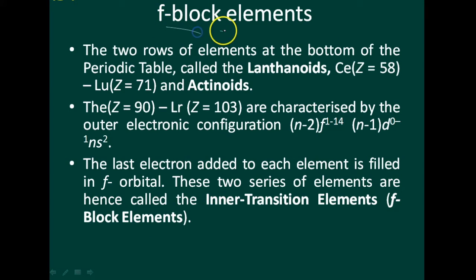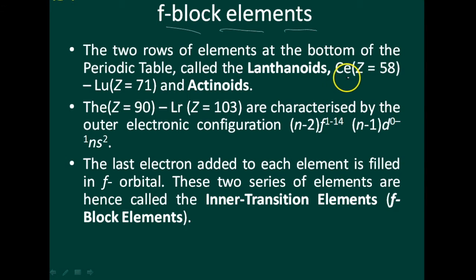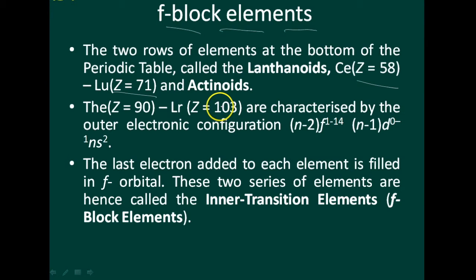Next is about f-block elements. The two rows of elements at the bottom of the periodic table are called f-block elements — the lanthanoids and the actinoids. The lanthanoids start from Z=58 and go to Z=71. These are characterized by the outer electronic configuration (n-2)f¹⁻¹⁴ (n-1)d⁰⁻¹ ns².